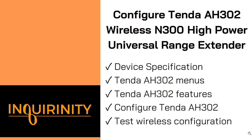In this video, we configured the Tenda AH302 Wireless N300 High Power Universal Range Extender. We reviewed the device specification, powered on and logged in to explore its menus and features, configured it as an access point and tested a wireless client connection, and also configured it as a range extender, successfully associating to the root AP and obtaining the appropriate IP address. Thank you for watching.